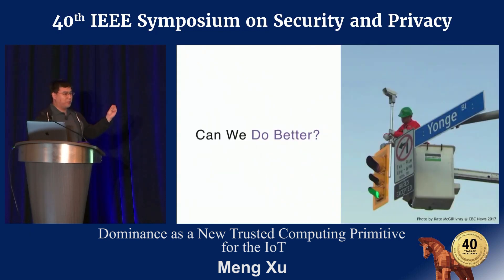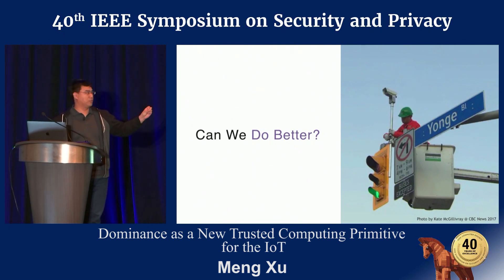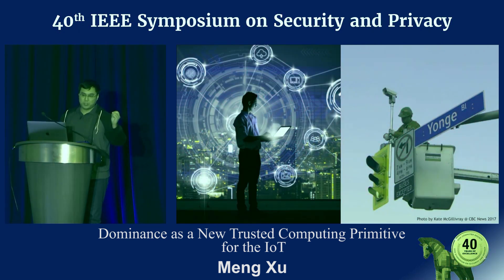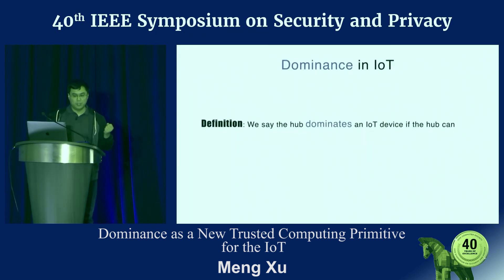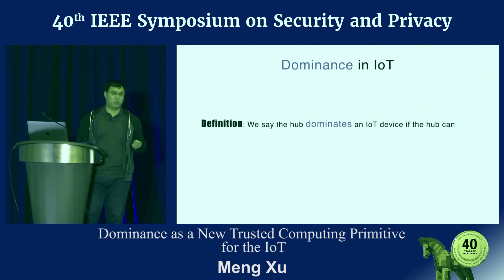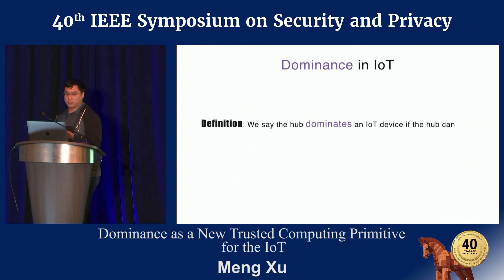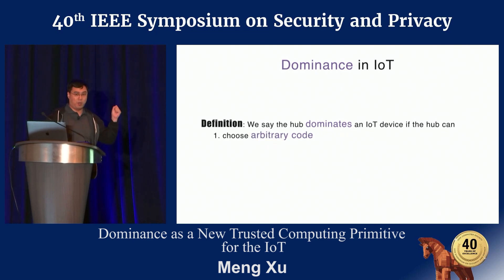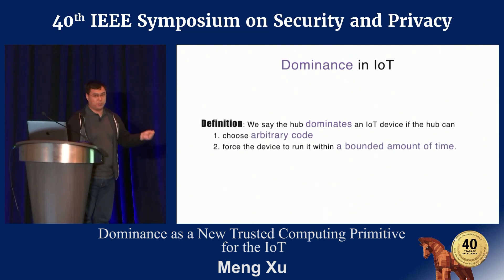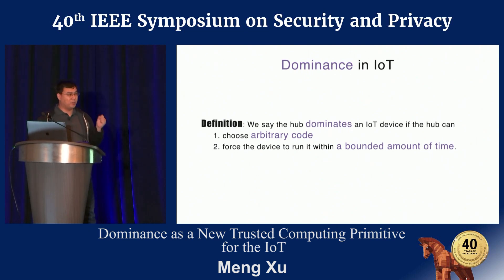Can we do better than sending people to fix all the devices? Can we press one button in the administration room and suddenly get all devices back and recovered into working order? This talk is about how to achieve this. The concept we want to introduce to the IoT world is called dominance. We say that an IoT hub can dominate IoT devices if the hub can choose arbitrary code and force the device to run that code within a bounded amount of time.